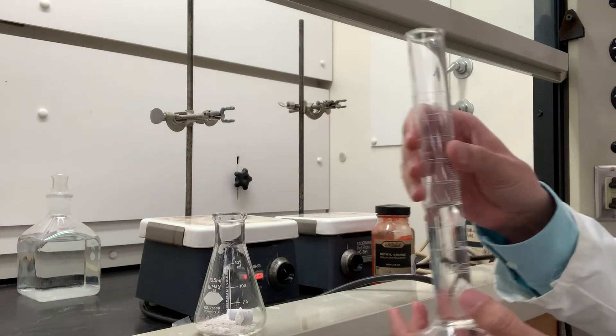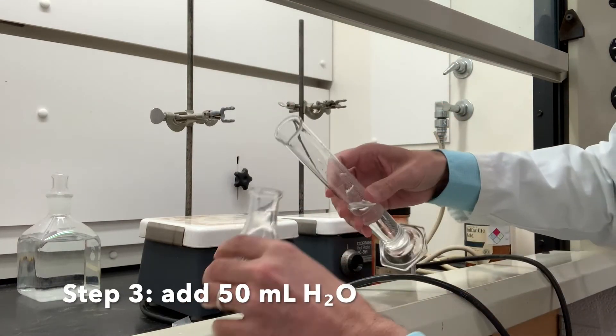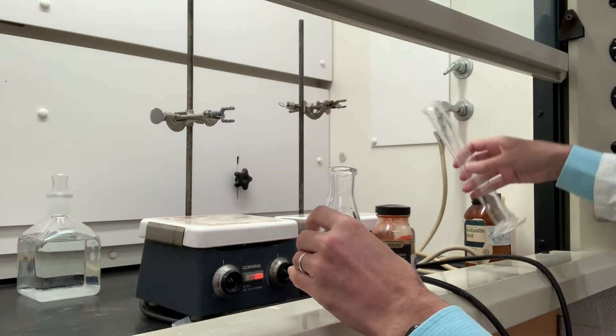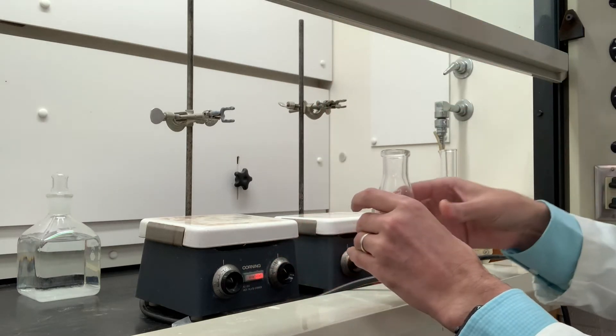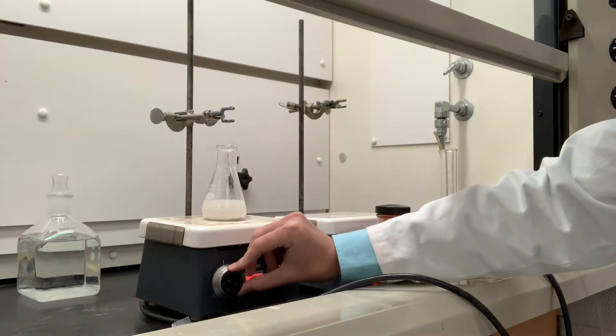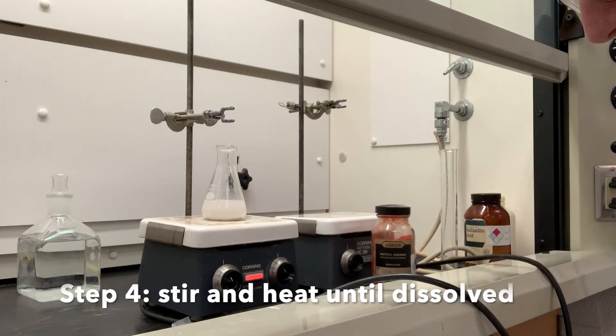Then we want to add 50 milliliters of water. This is distilled water. We'll heat that on a hot plate with stirring until it dissolves. This is part one.